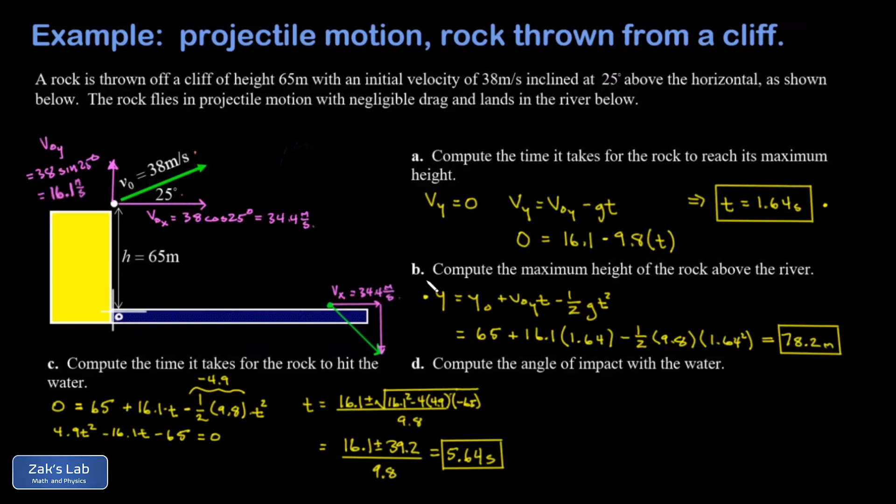Well now we have the total flight time, so we write down our y velocity equation: vᵧ = v₀ᵧ - gt. And we plug in our initial value 16.1 minus 9.8 times my total flight time here, 5.64 seconds. This gives me negative 39.2 meters per second for my final y velocity.